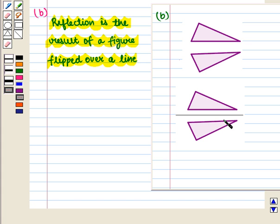And here also when one triangle is flipped over a line then we get the second triangle. So in this case these figures show reflection.